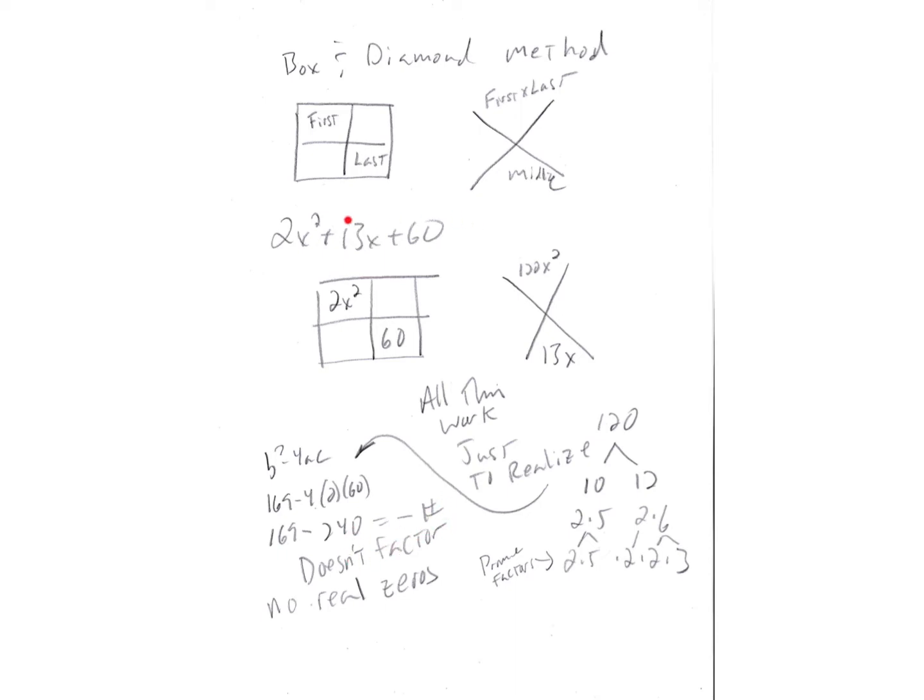Which means all the solutions to this quadratic equation are imaginary, complex, so there's no real zeros. So that tells me that this is never equal to zero, so the rational function doesn't cross the x-axis.